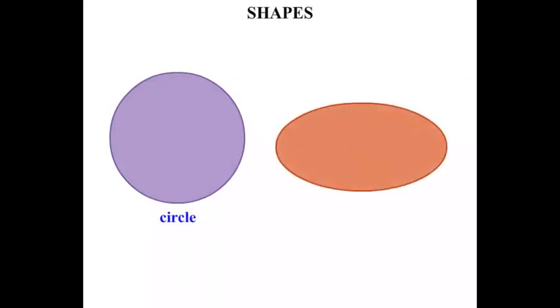And this one, a squashed circle if you like, is known as an oval, and sometimes referred to as an ellipse.